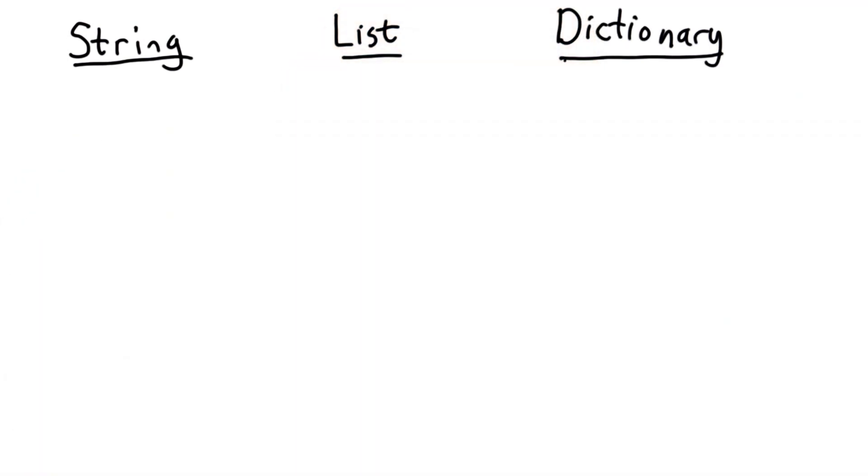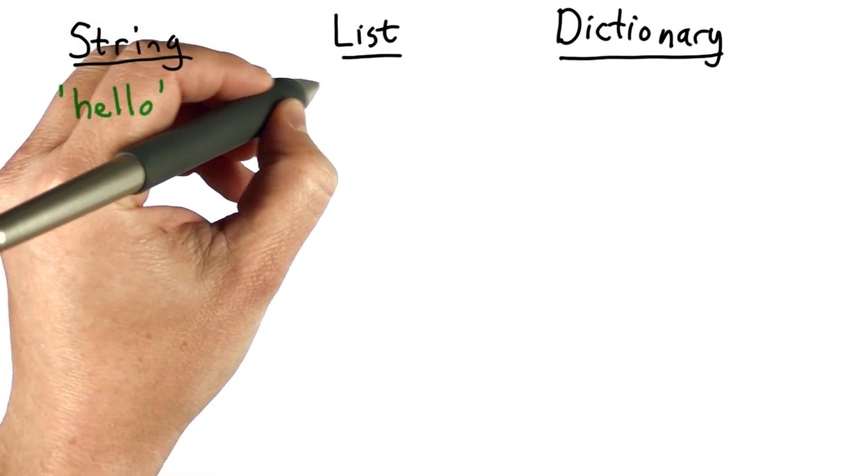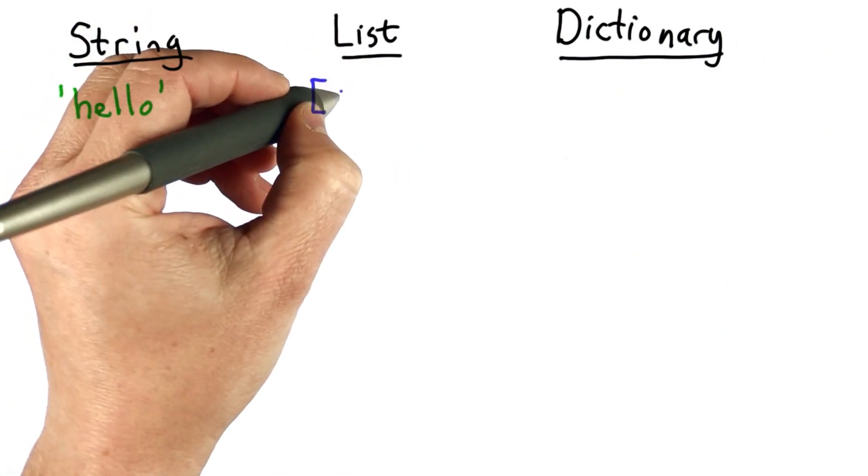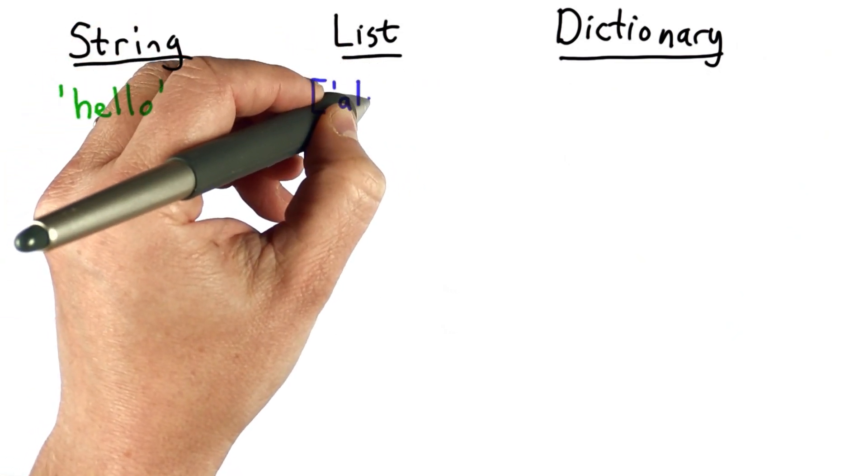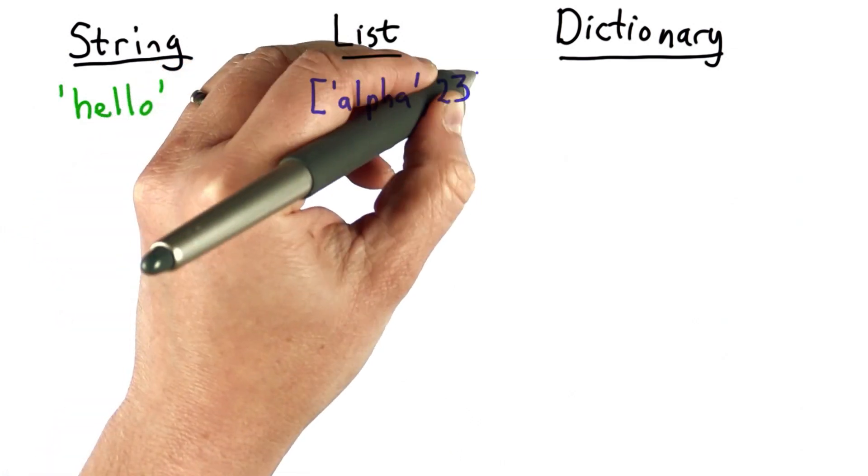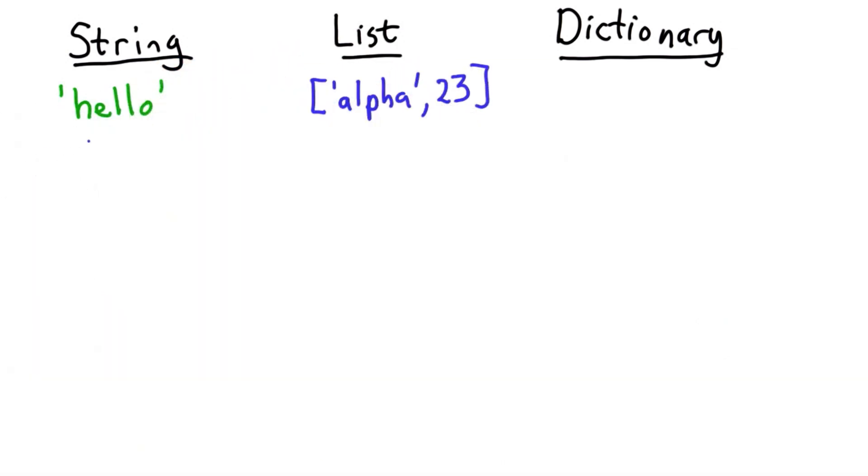So there are many things that are common between these three. There are other things that are different. So to create a string, we could have a sequence of characters inside quotes. To create a list, we use the square bracket, and we could have a sequence of elements inside the square bracket. And the elements could be any type, unlike a string where they had to be characters.